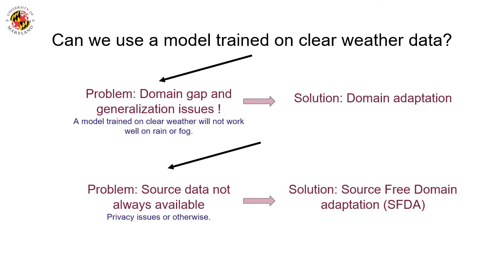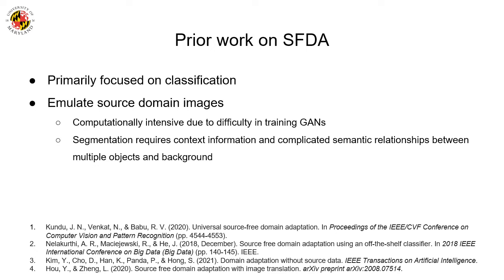DNNs are trained on a source dataset — a clear weather dataset in our case — and the pre-trained model is directly used to adapt to the unlabeled target domain, or the adverse weather dataset. Current methods for SFDA are used for image classification and may not work well for semantic segmentation due to the inherent differences between the classification and segmentation tasks. Moreover, many current SFDA methods use GANs to produce a copy of the original source domain distribution. In addition to being computationally intensive, image generation for segmentation requires GANs to capture contextual information and the semantic relationships between multiple objects and the background, which can be complicated in road scenes.